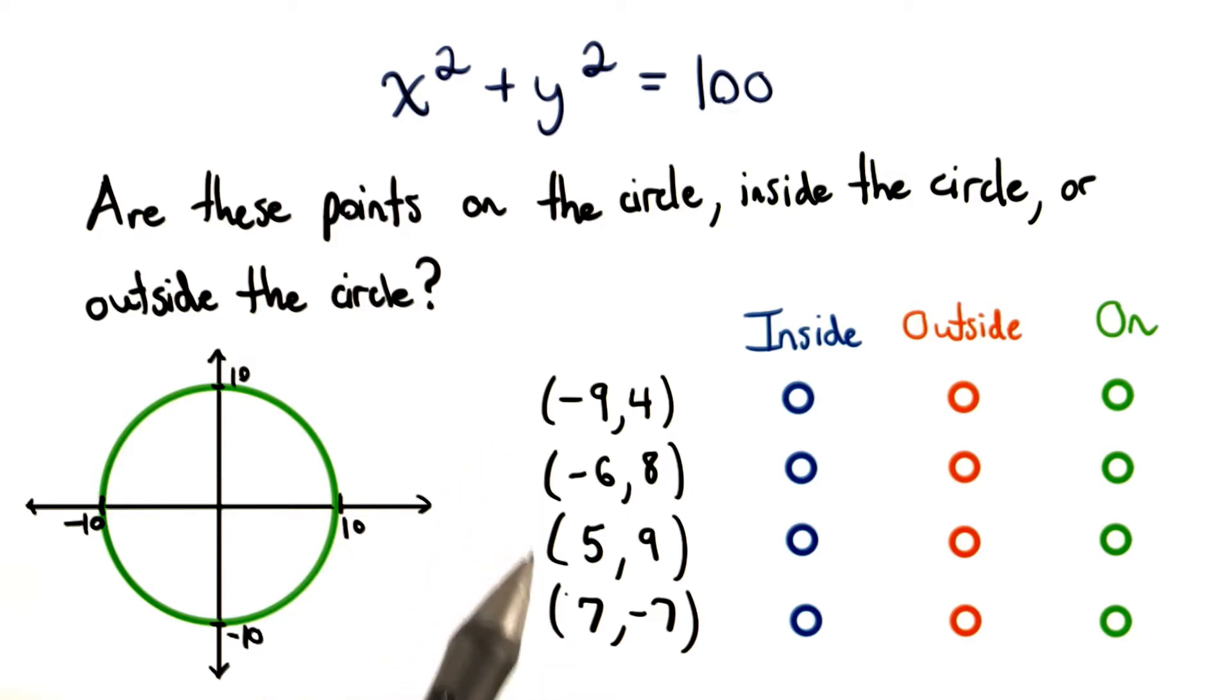Do you think each of these points would be inside of our circle, outside of our circle, or on the circle? Choose one of these for each of the points.